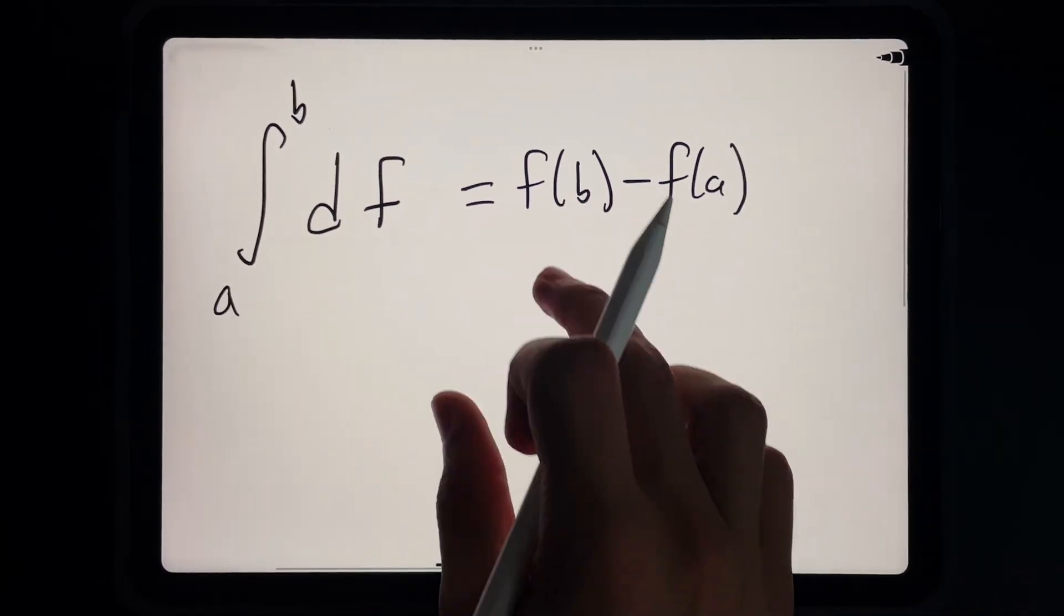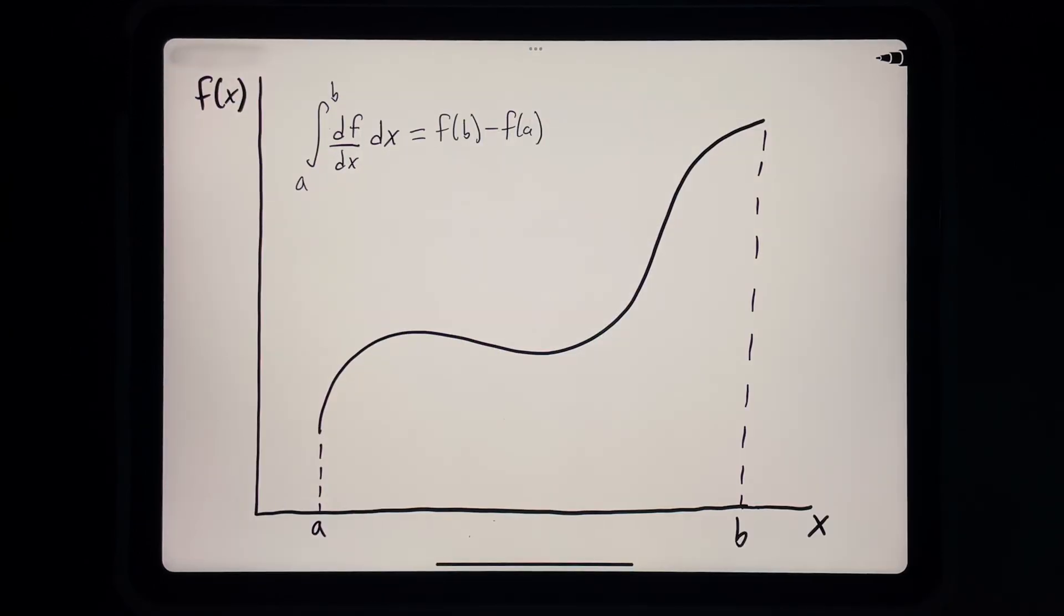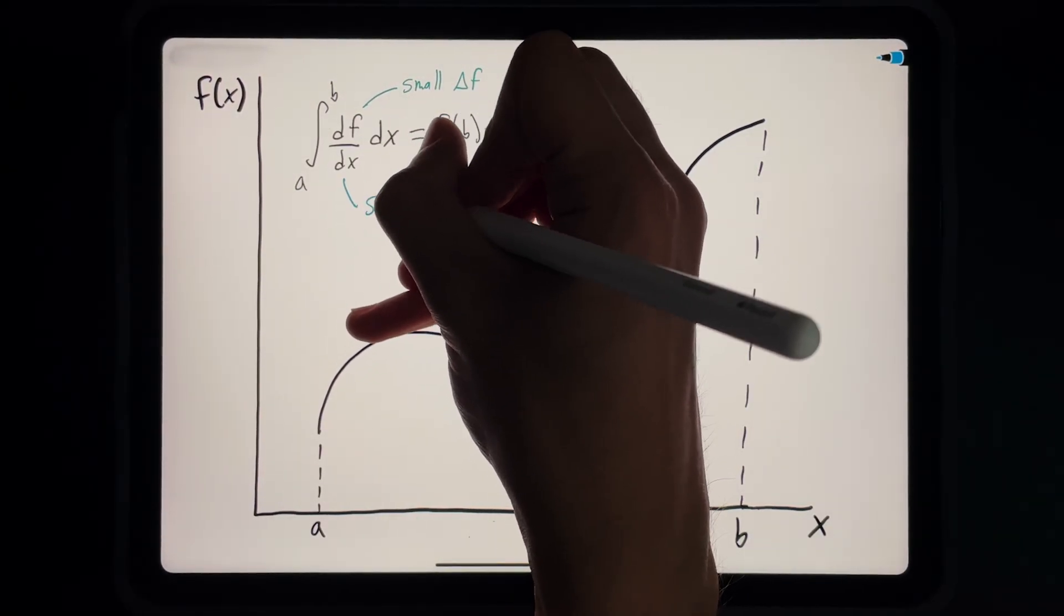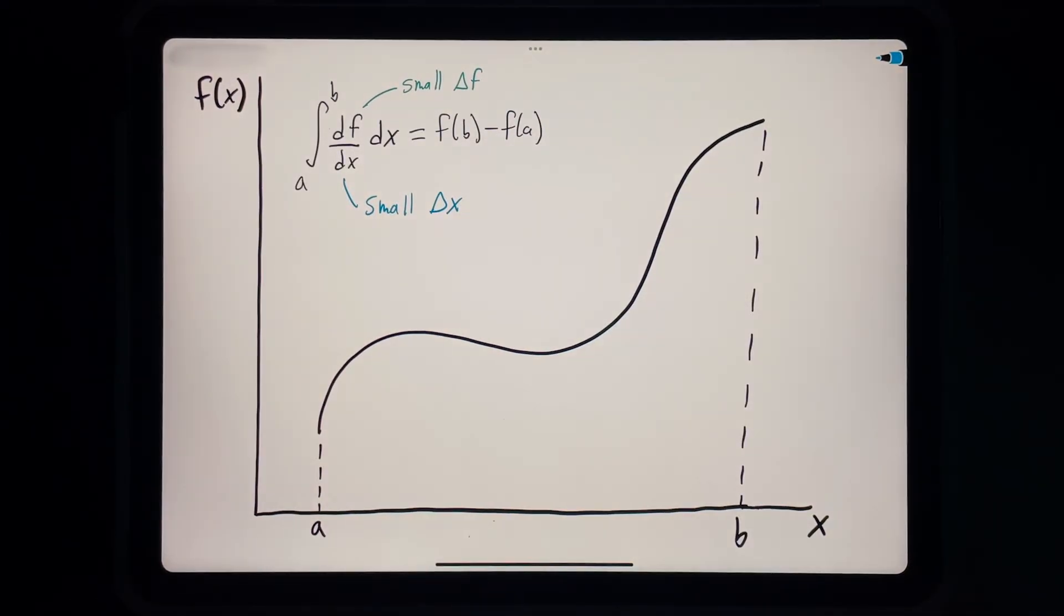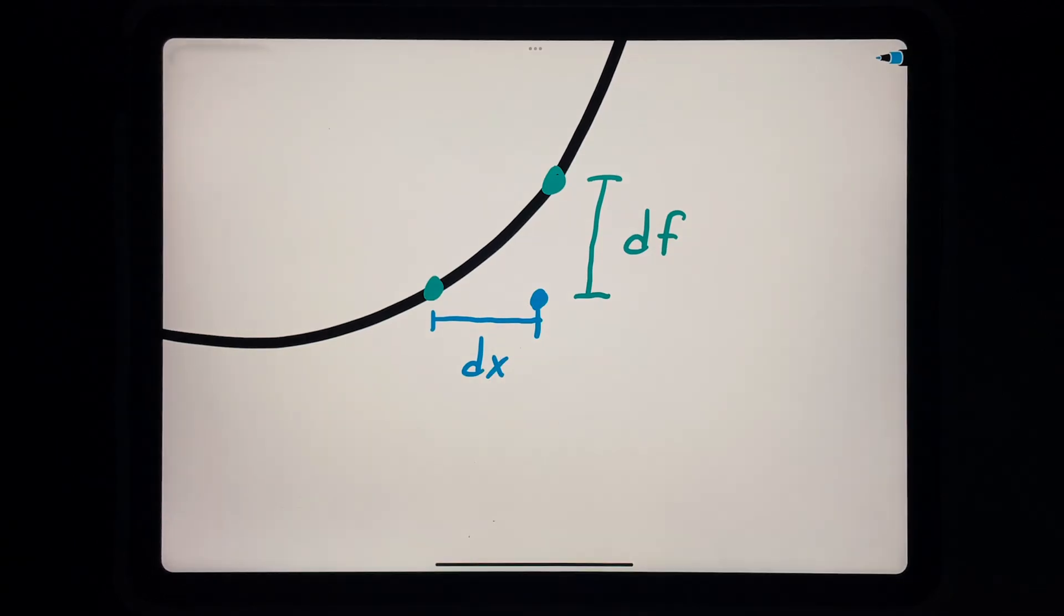Now let's rewrite our theorem the way it was originally written with Leibniz notation. Just as df was an infinitely small change in f, dx is an infinitely small change in x, which would be a very small step in the horizontal direction on our graph.